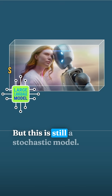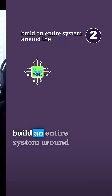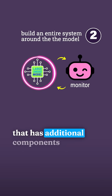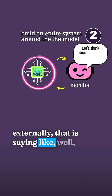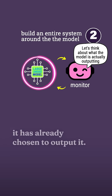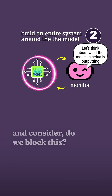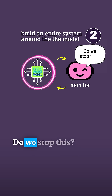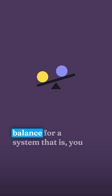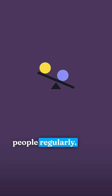But this is still a stochastic model. So the reality is that you can then build an entire system around the model that is monitoring it, that has additional components externally — basically looking at what the model is actually outputting after it has already chosen to output it, but before it gets to an actual user — and considering: do we block this? Do we stop this? Do we intervene?